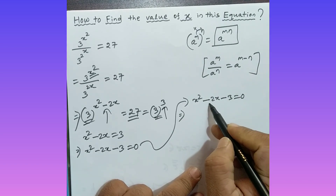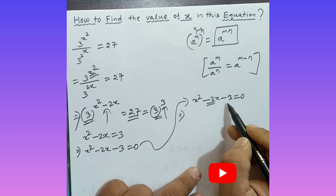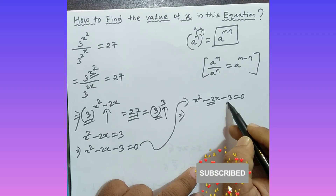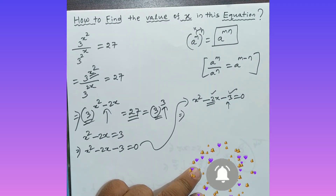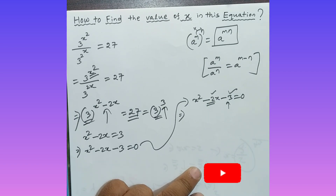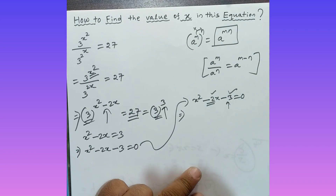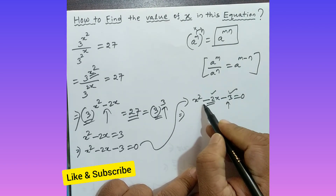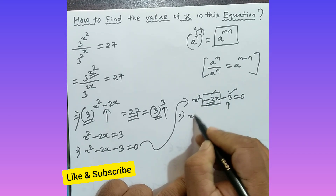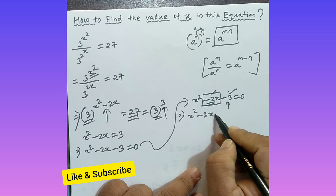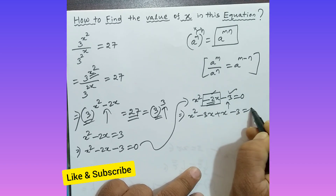For the quadratic x squared minus 2x minus 3 equals zero, the product of the two numbers we need is minus 3 and their sum is minus 2. Think: what two numbers have sum minus 2 and product minus 3? The answer is minus 3 and plus 1.